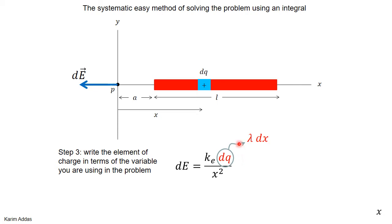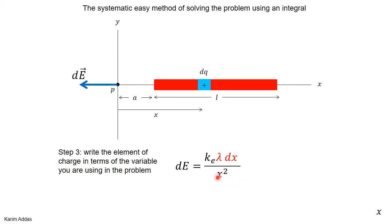Step three: we need to integrate, so we replace the variable and write dq as λ·dx. Now we have dE in a form we can integrate easily — the variable of integration is x, we have dx, and both λ and ke are constants in this problem, so we're ready to integrate.